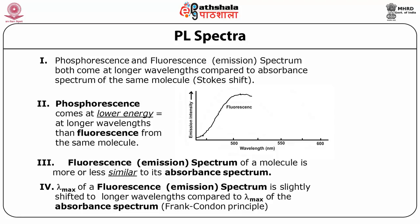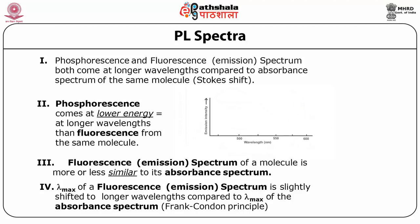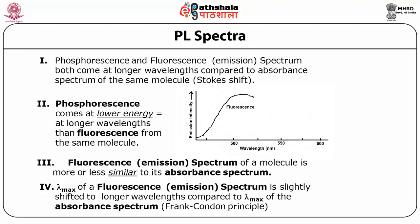In the PL spectra, the maximum wavelength of a fluorescence spectrum is slightly shifted to a longer wavelength compared to the maximum wavelength of the absorbance spectrum. This is known as the Franck-Condon principle. Phosphorescence and fluorescence emission spectra both occur at longer wavelengths compared to the absorbance spectrum of the same molecule—this is the Stokes shift. The fluorescence spectrum of a molecule is more or less similar to its absorbance spectrum, while phosphorescence comes at lower energy and longer wavelength than fluorescence from the same molecule.